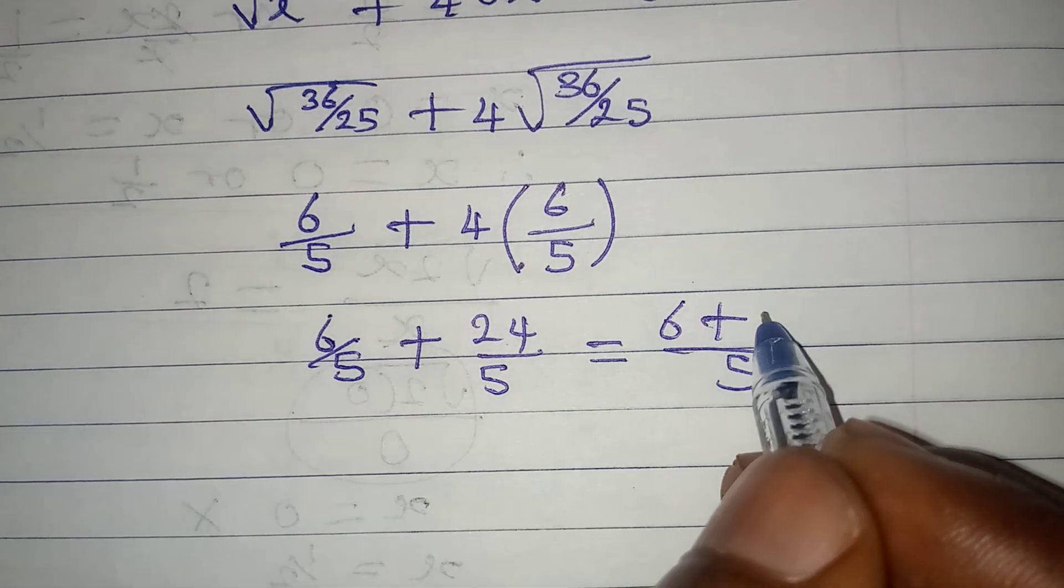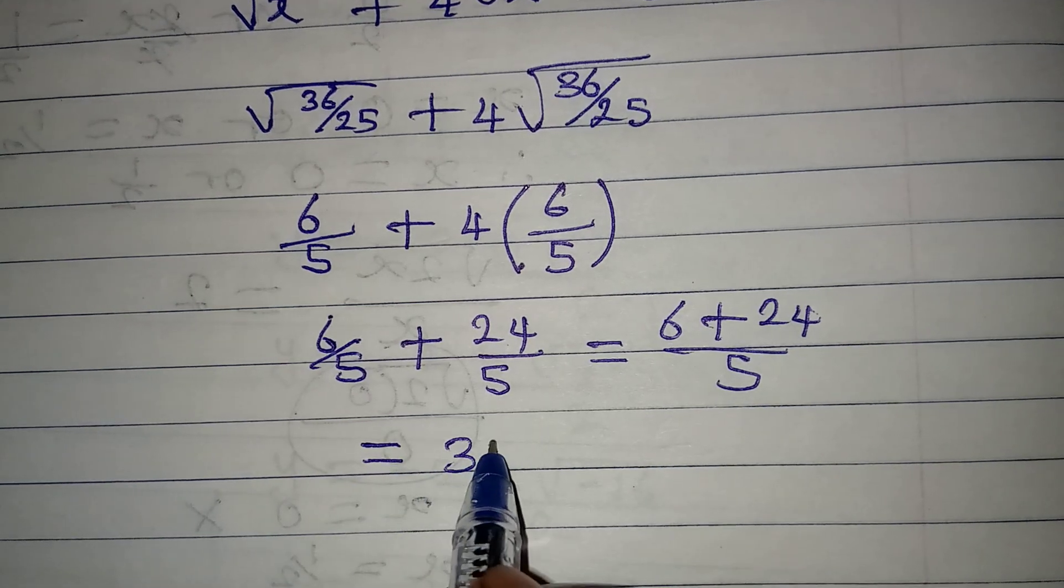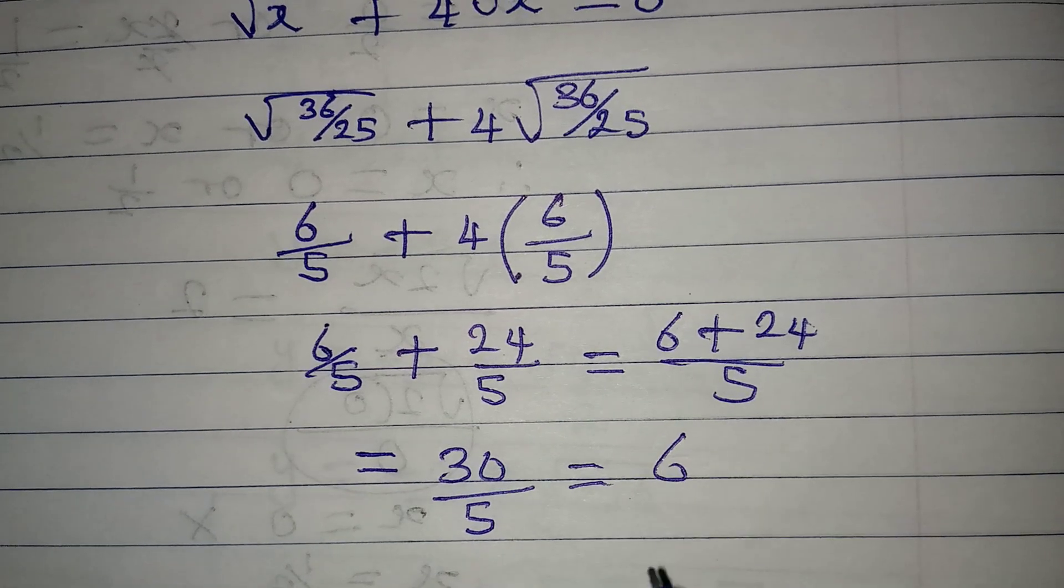Five divided by five is one times six, we have six, plus five divided by five is one times 24 is 24. This is going to give us 30 over five, and 30 over five is giving us six.